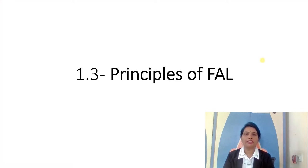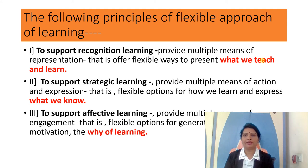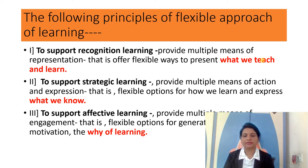Let us discuss the Principle of Flexible Approach of Learning in Module No. 1. Based on two decades of research on the nature of learning differences and the design of supporting learning environments, the flexible approach of learning principles map into three brain networks. They are the recognition, strategic, and affective networks that play a primary role in learning. There are three flexible approach of learning principles.